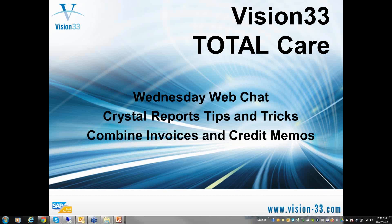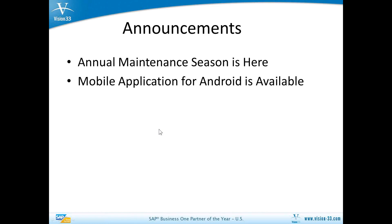I just want to go through a couple of early announcements with you. Number one, as you've probably noticed, annual maintenance invoices have been distributed and they are out there, and that annual maintenance season is here. If you have any questions about the detail related to your annual maintenance invoice, please be in touch with us. Contact your account executive, or if everything else fails, you can send an email to support at vision-33.com, and we will route you to everyone you need to talk to about that detail.